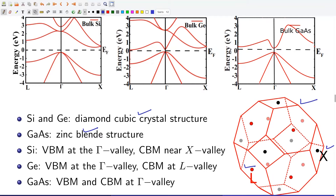In case of silicon, the valence band maximum (VBM) is located at the gamma point, and the conduction band minimum (CBM) is located close to the X valley. In case of germanium, VBM is located at the gamma valley and CBM is located at the L valley. In case of gallium arsenide, both VBM and CBM are located at the gamma valley, where gamma is the center of the Brillouin zone.